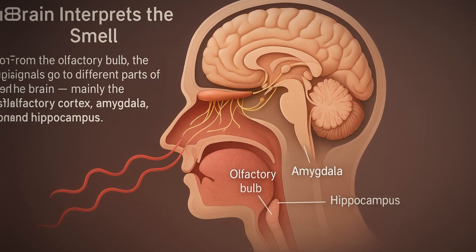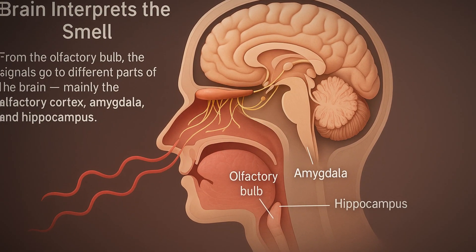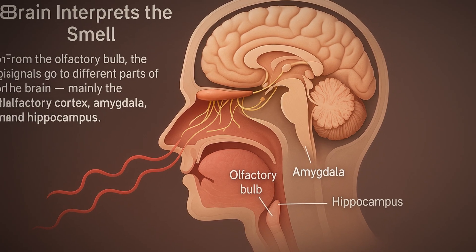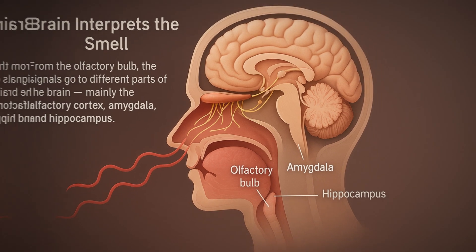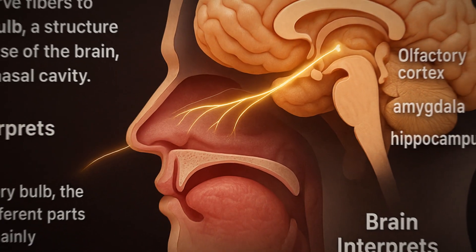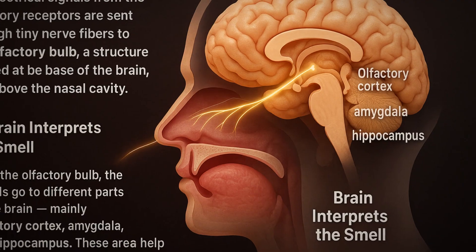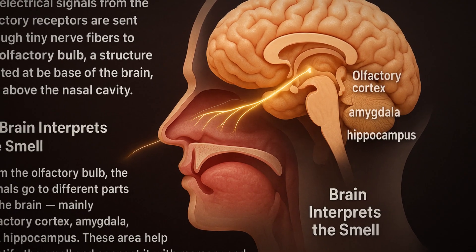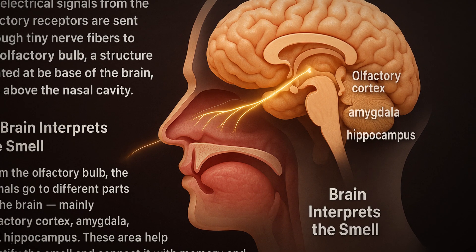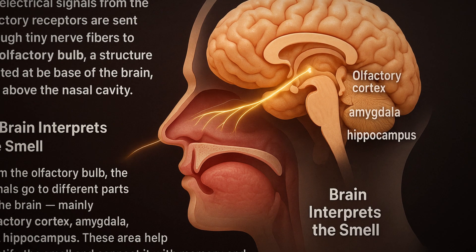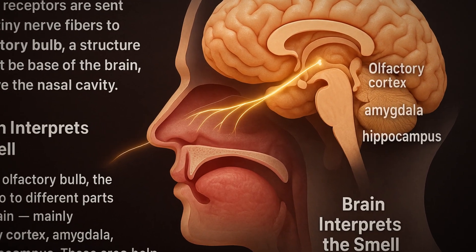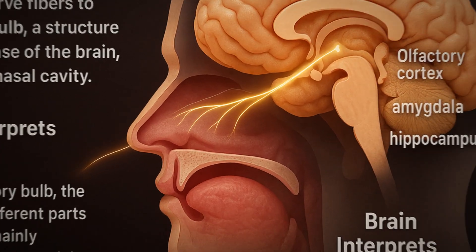Brain Interprets the Smell. From the olfactory bulb, the signals go to different parts of the brain — mainly the olfactory cortex, amygdala, and hippocampus. These areas help identify the smell and connect it with memory and emotions. That's why some smells can remind you of specific people, places, or feelings.